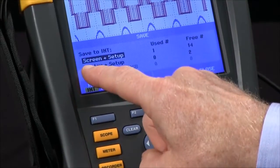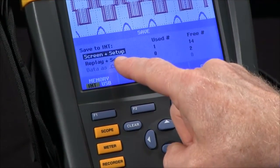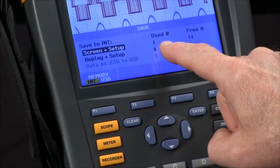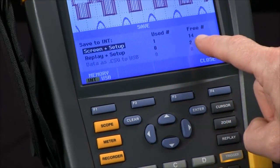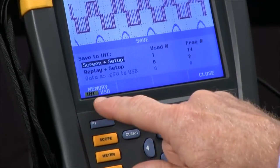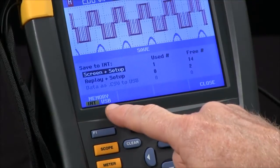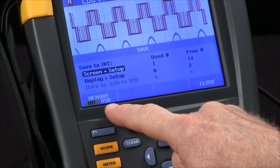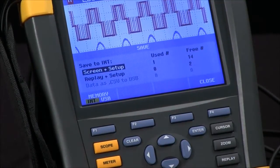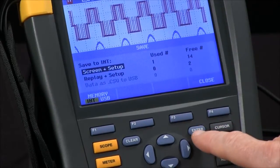At this point, we've got screen and setup highlighted. We've got one location used and 14 free in memory. We're going to save to the internal memory as opposed to an external USB stick that we could plug into the side of the scope. We'll hit the Enter button to confirm.